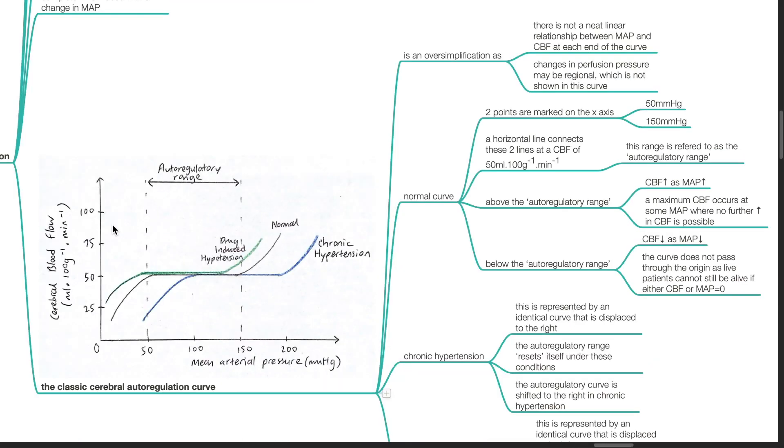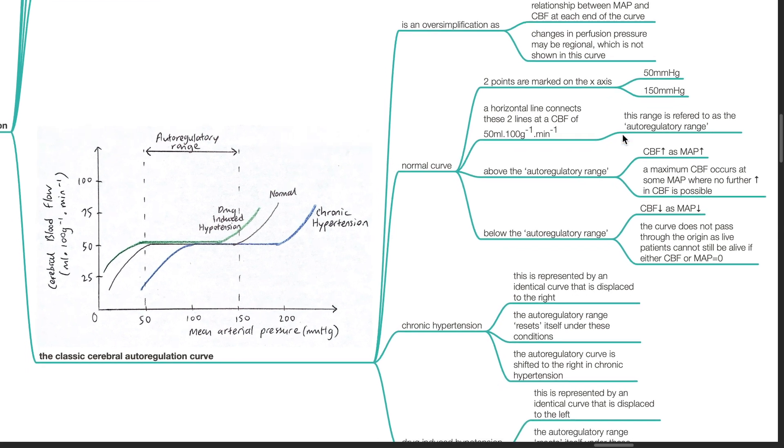The classic cerebral autoregulation curve is an oversimplification as there is not a neat linear relationship between MAP and CBF at each end of the curve. Changes in perfusion pressure may be regional, which is not shown in this curve.